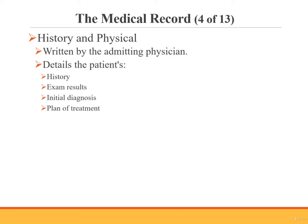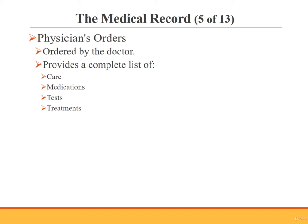This slide and the following slides discuss the common elements of the medical record. The first common element is the history and physical, which is written by the admitting physician. This section gives detailed information about the patient's history, any exam results, an initial diagnosis, and the physician's plan of treatment. Another common element is the physician's orders, which include any orders the physician has requested, such as specific care, medications, tests, or treatments.